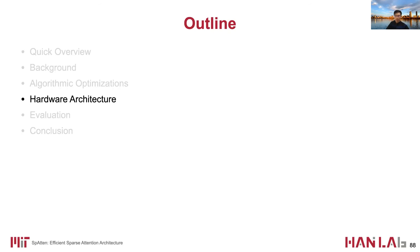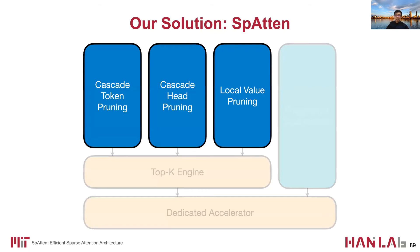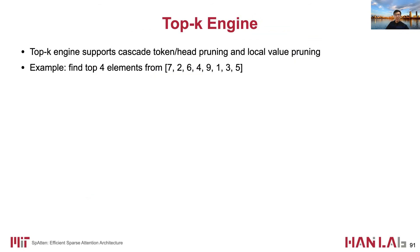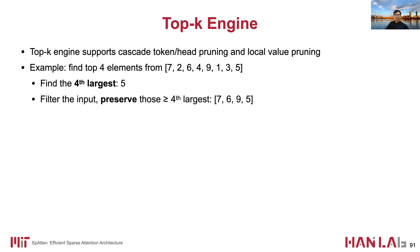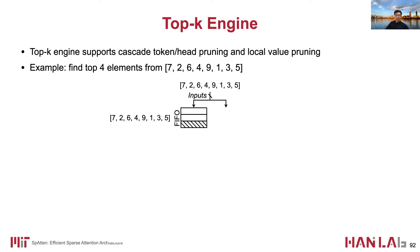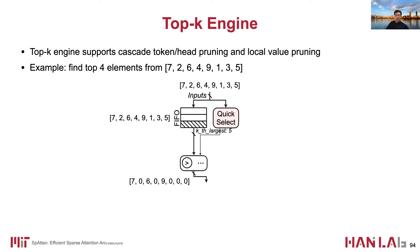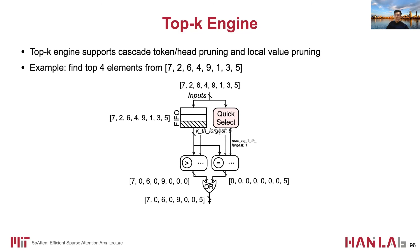Then we come to the hardware support. In the three pruning techniques, they all contain a top-k operation to find important tokens, heads, or values. Therefore, we design a specialized high-parallelism top-k engine to support this process. Here we show an example: find the top four elements from an input array. One solution is to first find the fourth largest element — which is five — and then use it to filter the input. We use a FIFO to buffer the array and a quick-select module to find the fourth largest element. We then compare the input array with five, preserve elements greater than or equal to five, merge them together, and use a zero eliminator to remove zeros and produce final results.